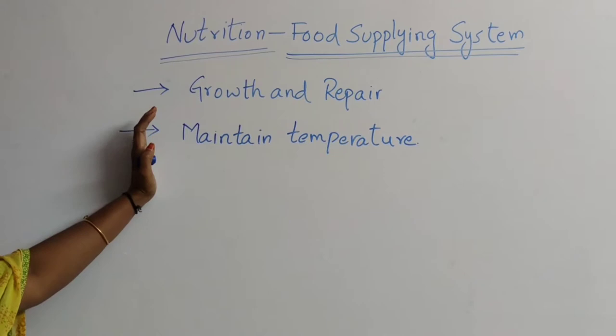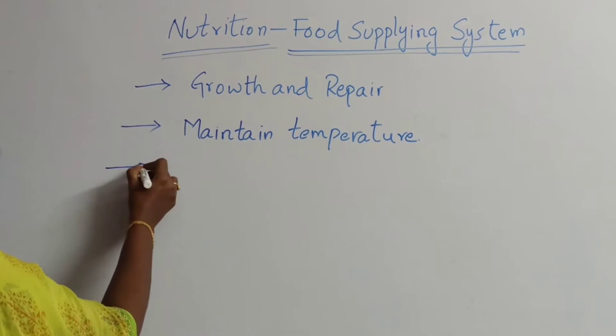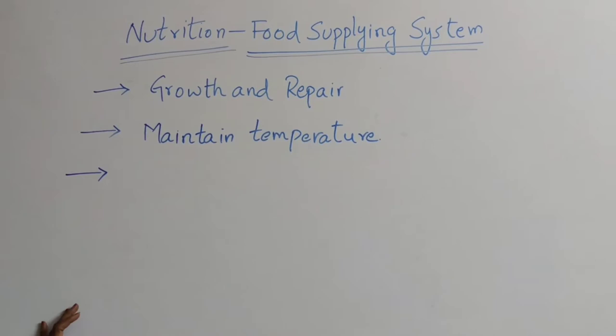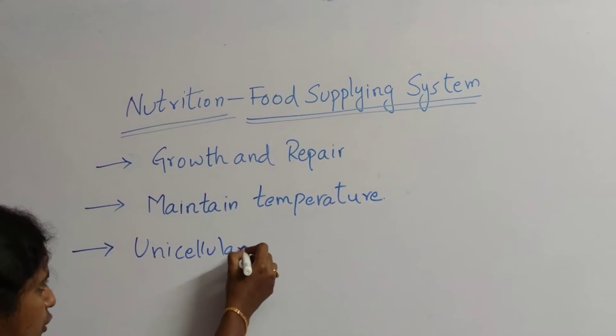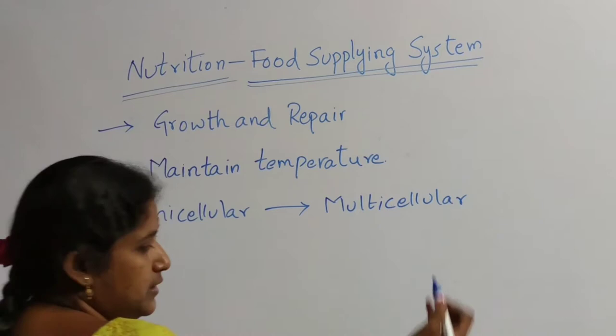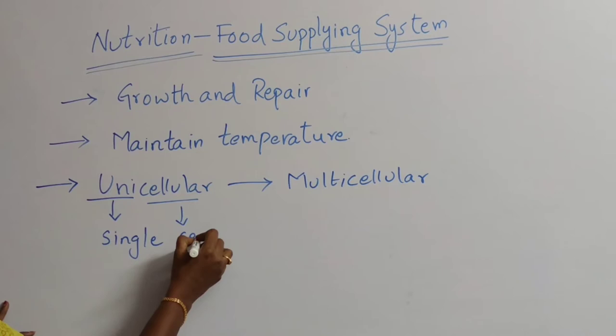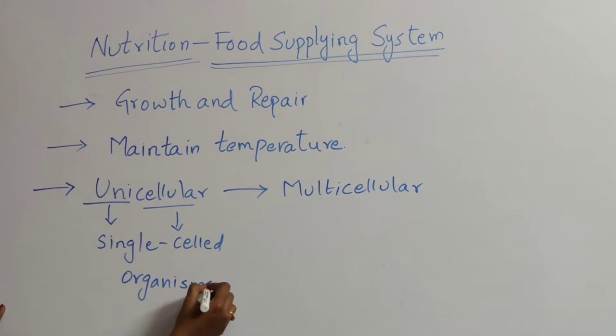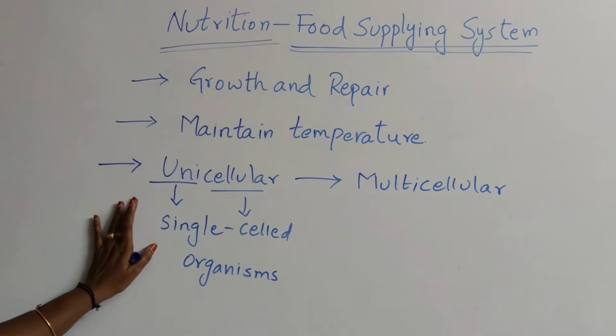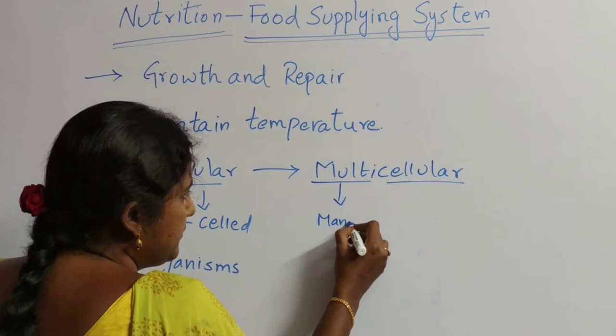Nutrition or the food we eat differs from organism to organism. For example, it differs from unicellular to multicellular organisms. Unicellular organisms - uni means single, cellular means celled - so single-celled organisms are called unicellular. Multicellular - multi means many, cellular means celled - so many-celled organisms.